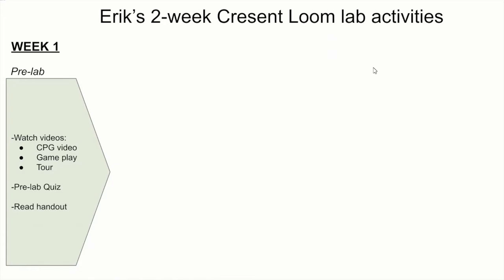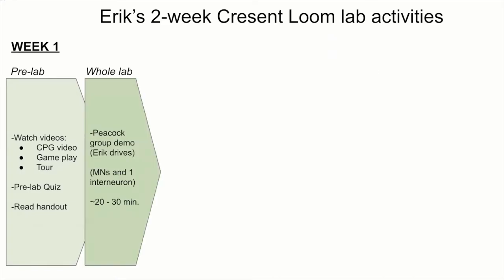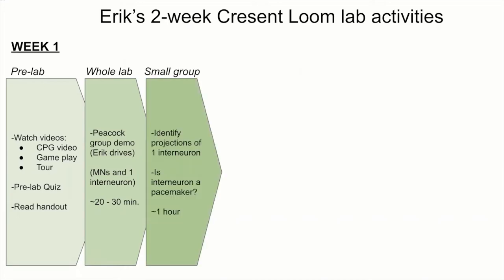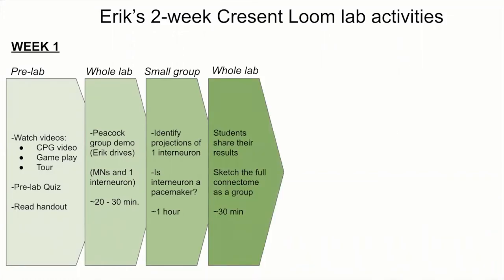Before the first lab, I had the students watch the videos that Liz, Olive, and I prepared ahead of time. They also took a pre-lab quiz and read a handout. At the beginning of each lab section, we worked together as a group where I drove the Connectome Explorer and students suggested experiments so that we could work on some of the neurons in Peacock. This took about 20 to 30 minutes, after which students broke out into their small groups in breakout rooms. Each small group was assigned one interneuron and asked to determine its projections, as well as to determine whether that neuron was a pacemaker.